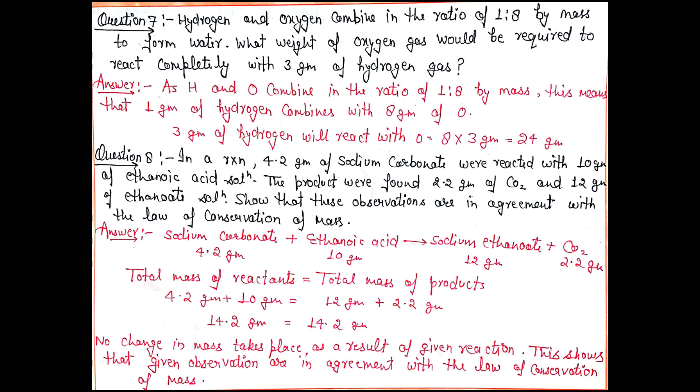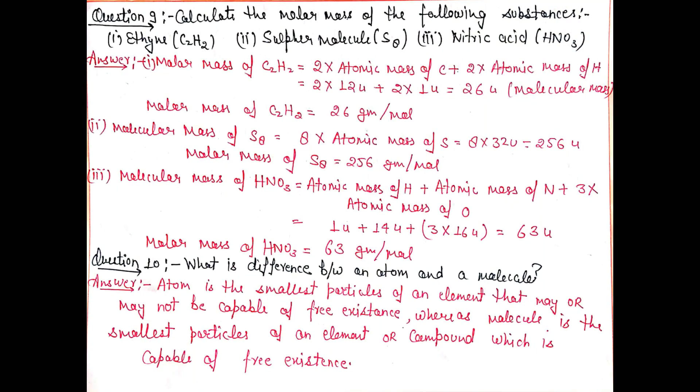Question 9: Calculate the molar mass of the following substances: ethyne, sulfur molecule, and nitric acid. To find the molar mass of any substance, we calculate the number of atoms and their atomic masses in grams per mole, as I have done here for ethyne, sulfur molecule, and nitric acid. You can note this down properly.